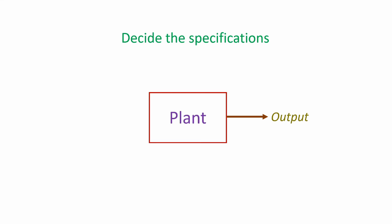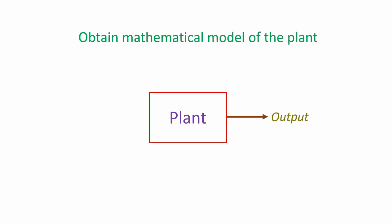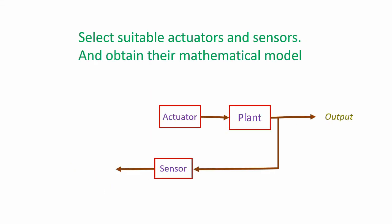Then we have to select a suitable system configuration — that is, whether we need an open loop system, a closed loop system, or a more complicated system like multi-loop systems. Then we have to obtain the mathematical model for the plant, which might be in the form of differential equations. We also have to select suitable actuators and sensors that are available in the market and obtain their mathematical models as well.